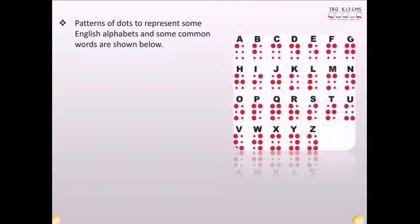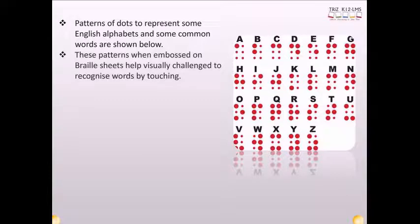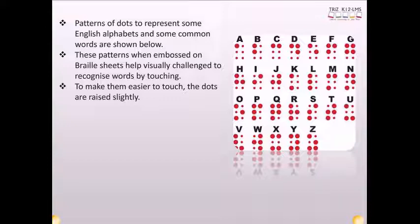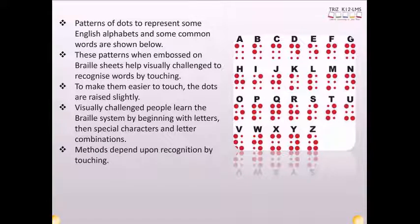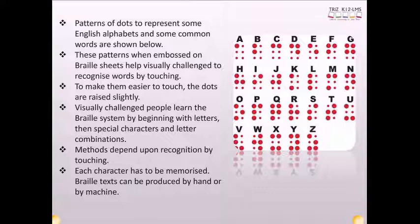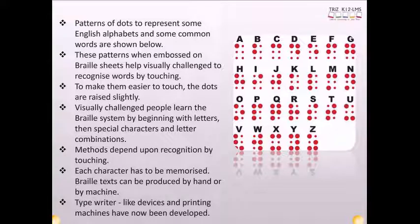Patterns of dots to represent some English alphabets and some common words are shown. These patterns when embossed on Braille sheets help visually challenged to recognize words by touching. To make them easier to touch, the dots are raised slightly. Visually challenged people learn the Braille system by beginning with letters, then special characters and letter combinations. Methods depend upon recognition by touching. Each character has to be memorized. Braille text can be produced by hand or by machine. Typewriter-like devices and printing machines have now been developed.